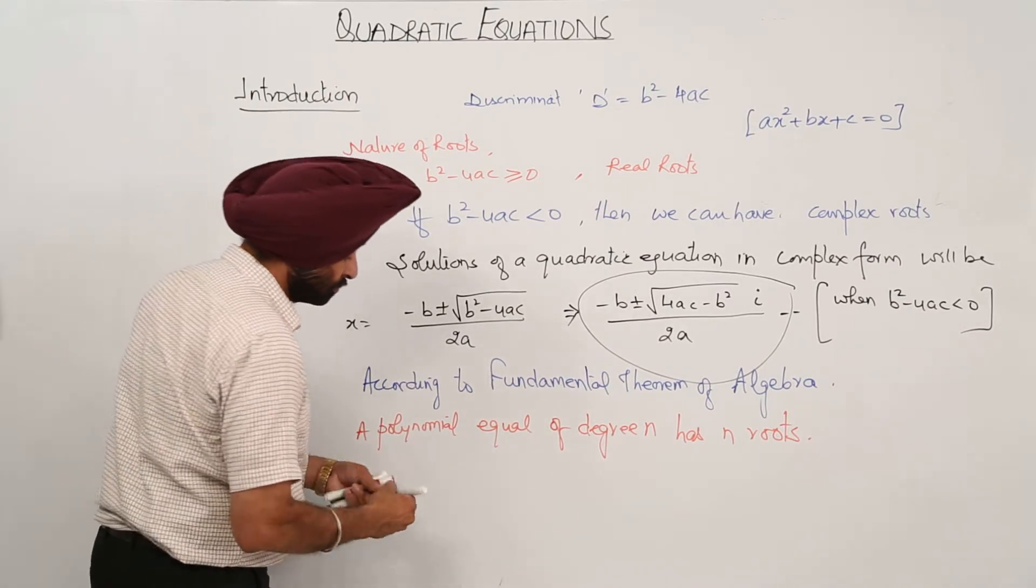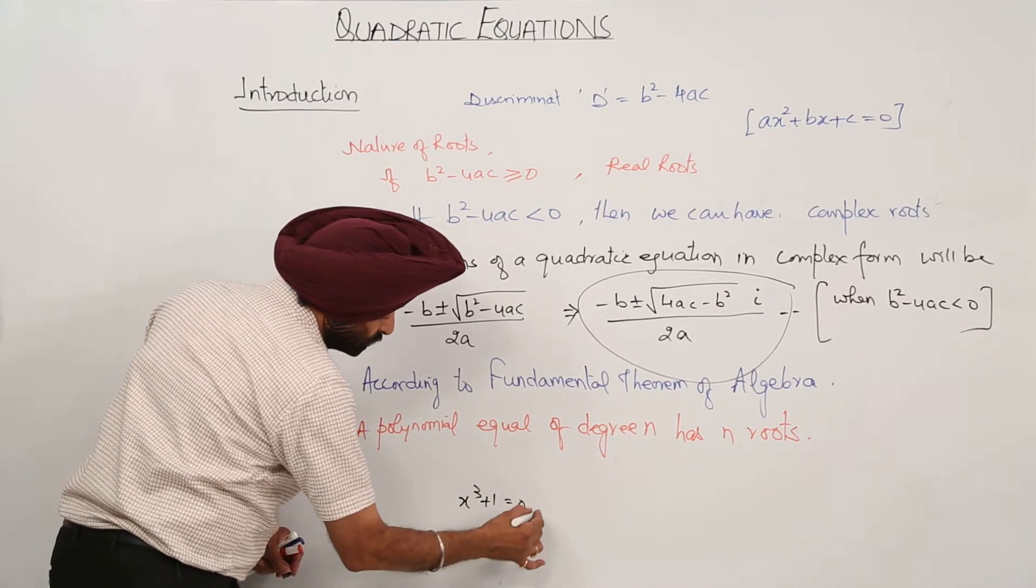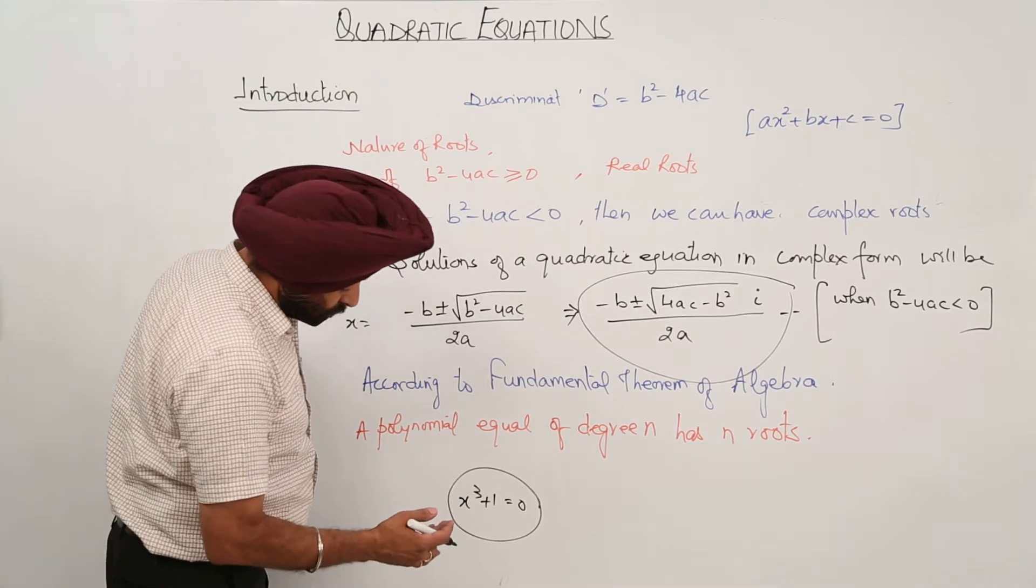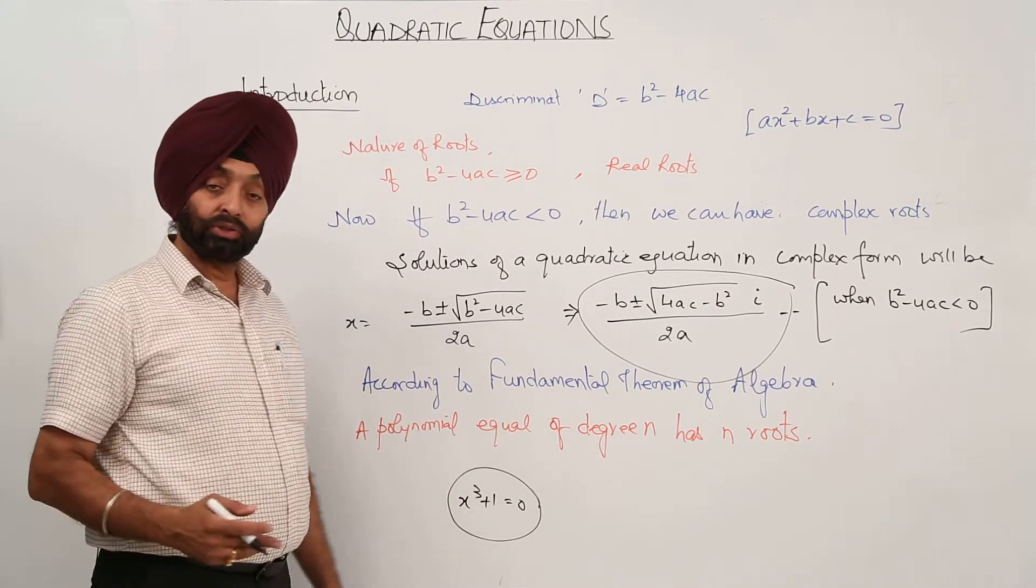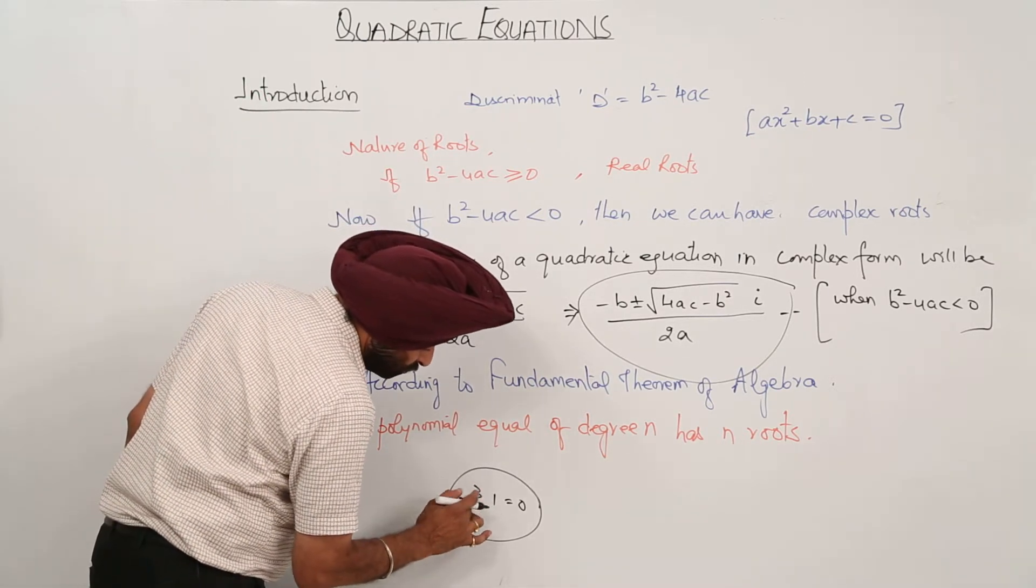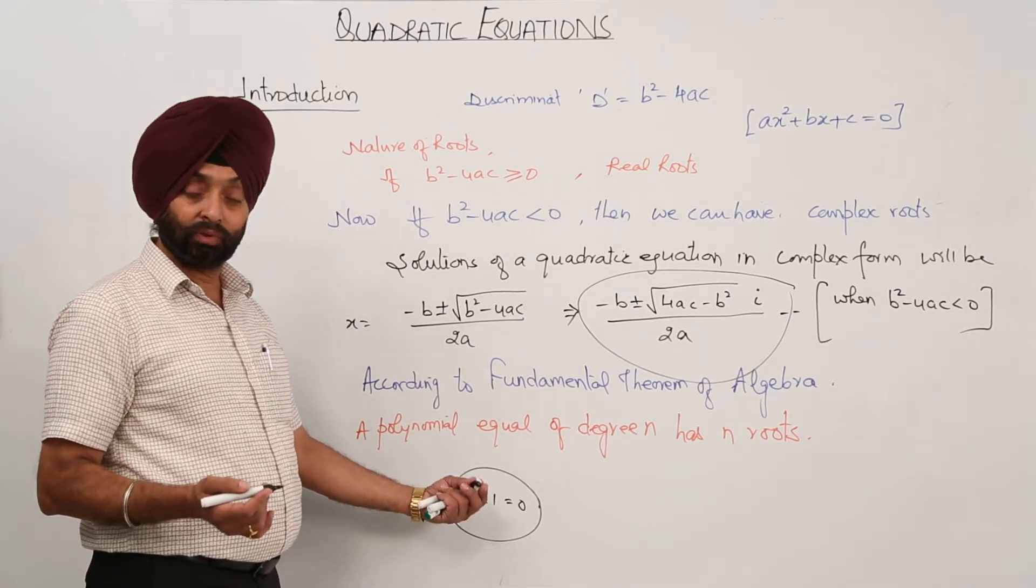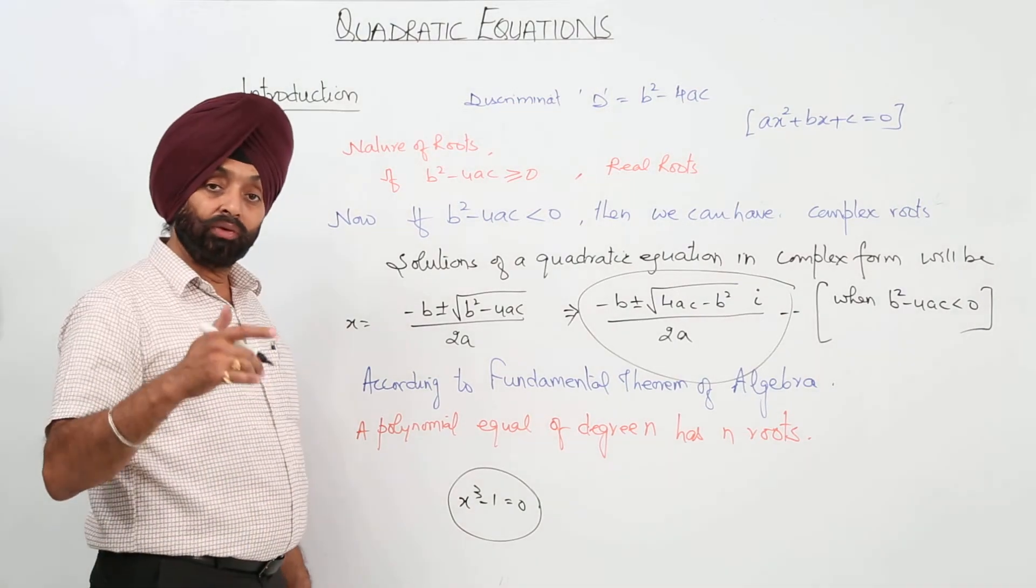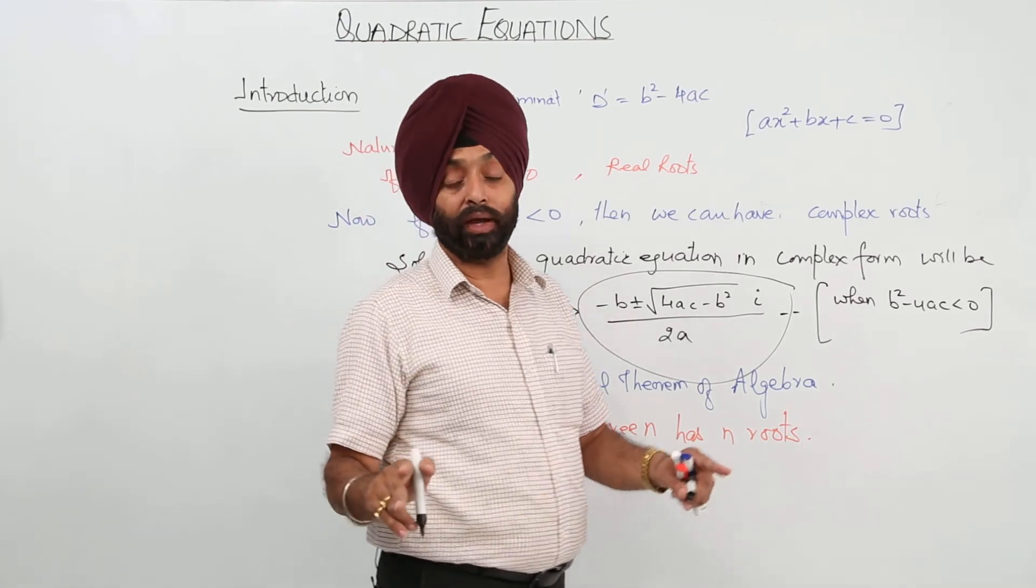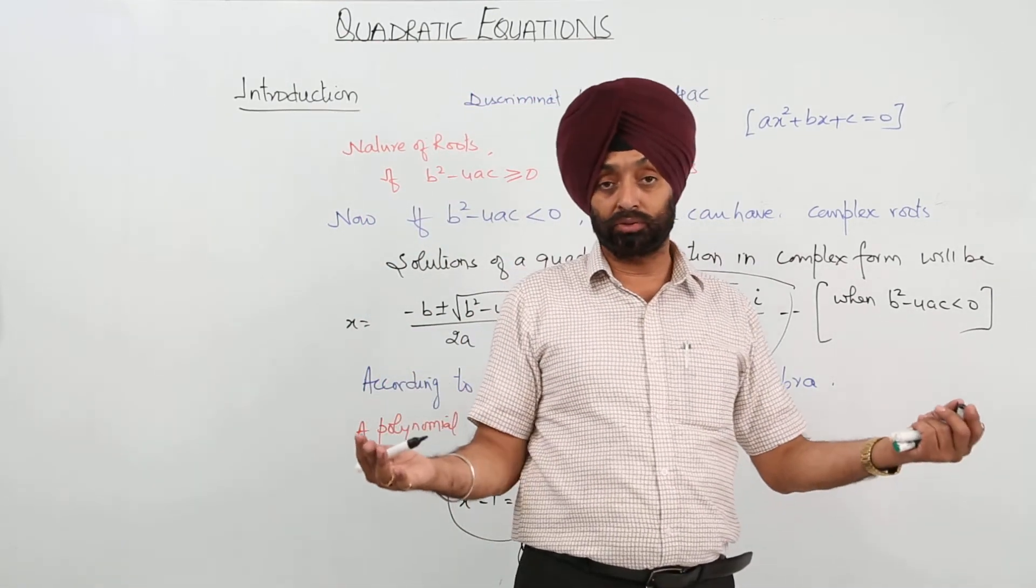If we are having x cube in class 10th, suppose it was x cube plus 1 is equal to 0, then what we were writing? We were writing only one answer, or you can even write it x cube minus 1. So for x cube minus 1 what we were having? We were having only one single root and we were not writing 2. But now you have to find the, whatever the degree is that will be the roots. Is it clear?